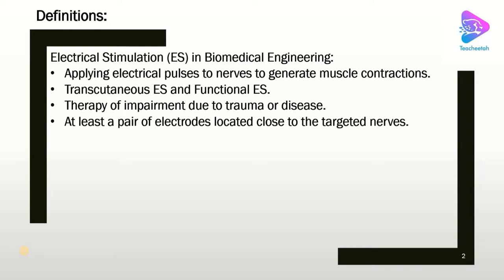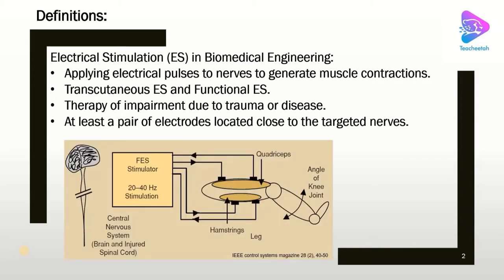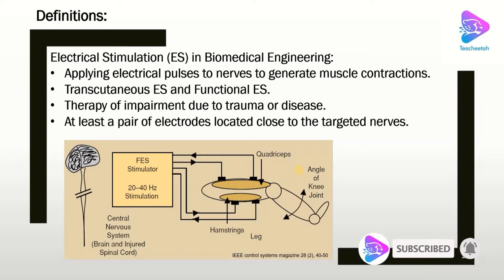To do this, we need at least a pair of electrodes located close to the targeted nerves. This picture schematically shows how electrical stimulation works. Because of a trauma or disease, the connection between the brain and the nerve is interrupted, which means we can apply electrical stimulation to nerves to cause contraction on the muscle, which causes motion. Electrical stimulation also has applications for deep brain stimulation or implantable stimulation inside the body.